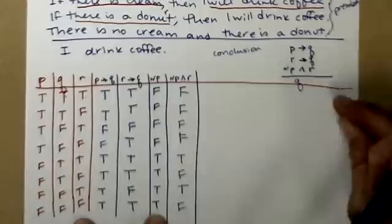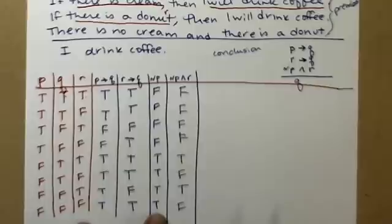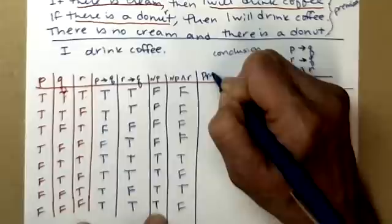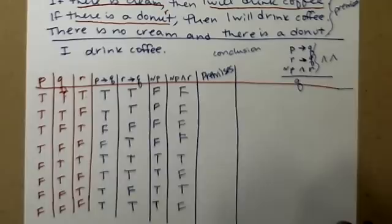So there are all my premises. So the next thing we do is we and all of these together. So I'm going to do an and with all of these. All three have to be true to get true in my and column. So I'm just going to do a big and and label it premises. Otherwise it's too long to write all of these with ands in between them.